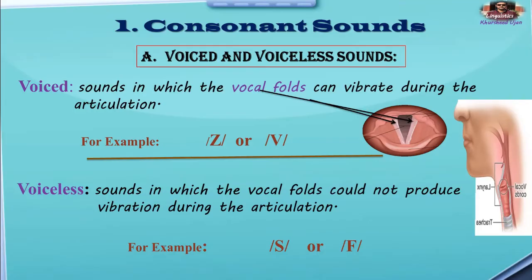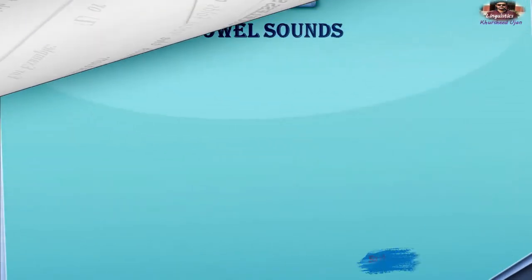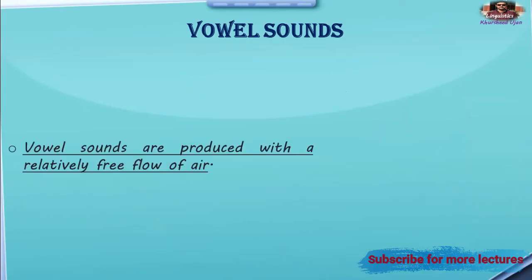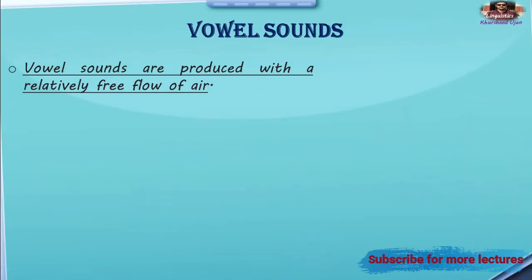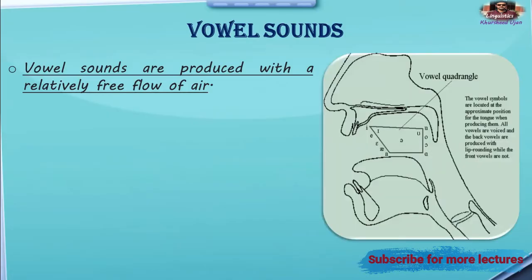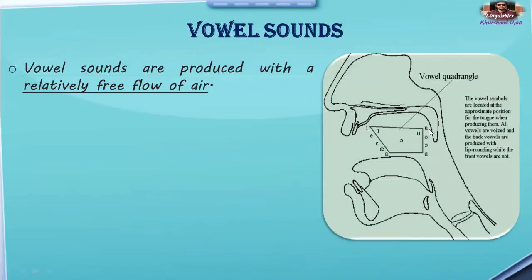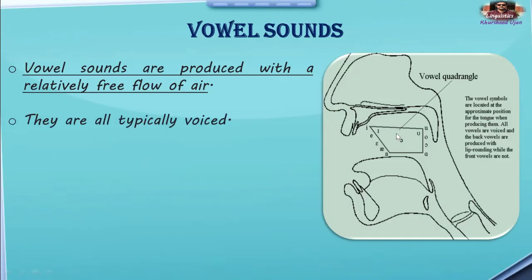Here are examples such as the 's' or 'f' sound for voiceless sounds. Vowel sounds are produced with a relatively free flow of air, meaning our mouth is open when producing them. These are the positions where vowel sounds are uttered. All vowel sounds are typically voiced sounds, where the vocal folds vibrate, unlike consonant sounds which are divided into voiced and voiceless.